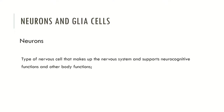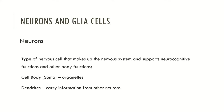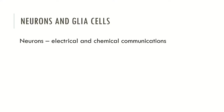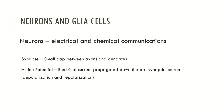Neurons are a type of nervous cell that makes up the nervous system and supports neurocognitive functions and other body functions. We normally divide neurons into three major areas: the cell body, which contains the organelles; dendrites, which carry information from other neurons; and axons, which have a branching structure that transmits the action potential. Neurons may have electrical and chemical communications, and communicate with each other via synapses — small gaps between axons and dendrites.